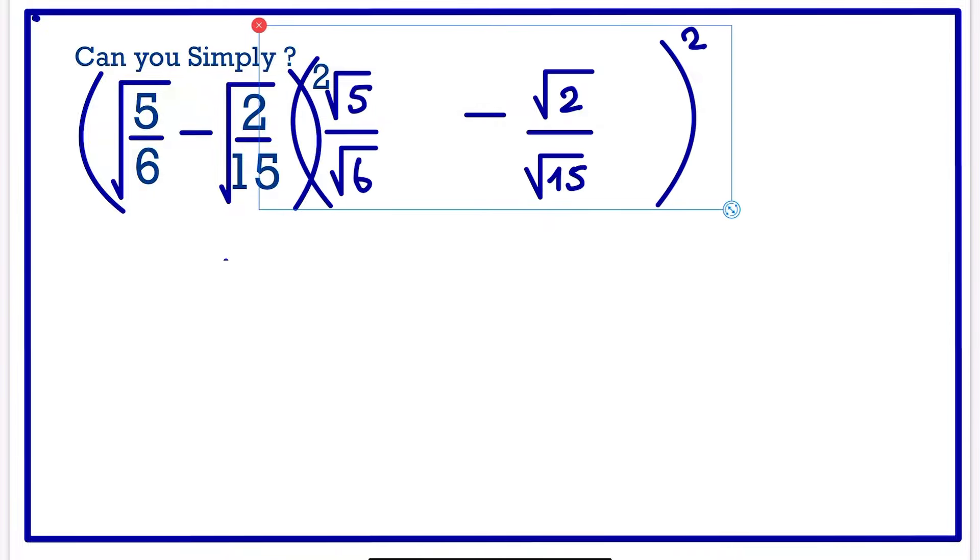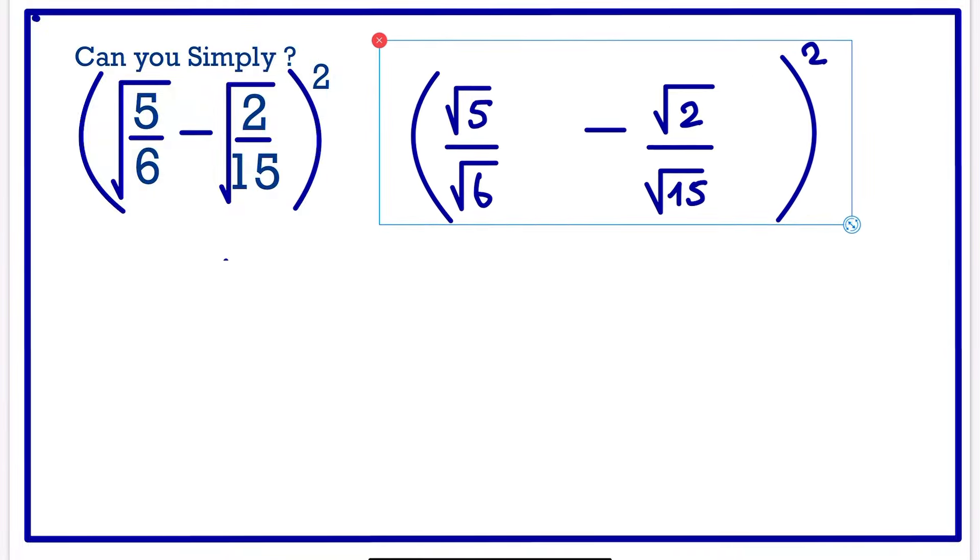This will give us the square root of 5 divided by the square root of 6 minus the square root of 2 divided by the square root of 15.